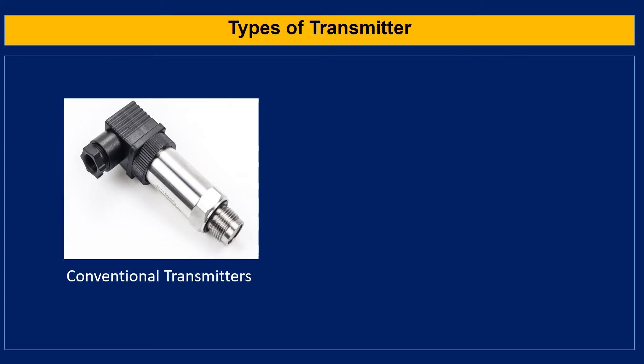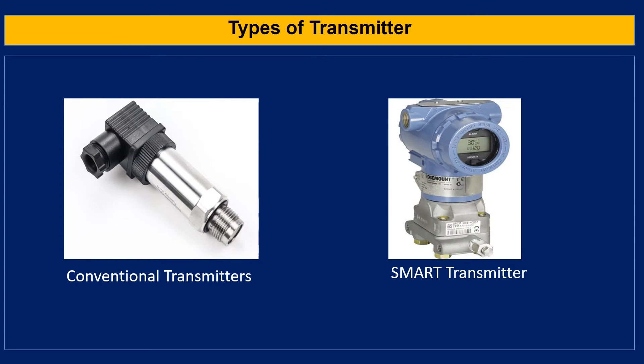According to the functional capacities of process transmitters, they can be categorized into two categories: conventional transmitters and smart transmitters.